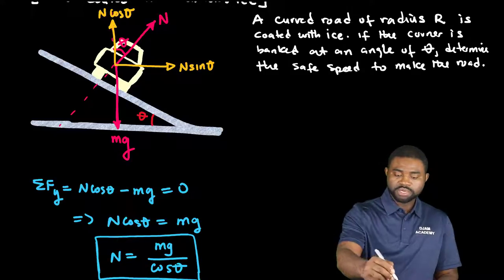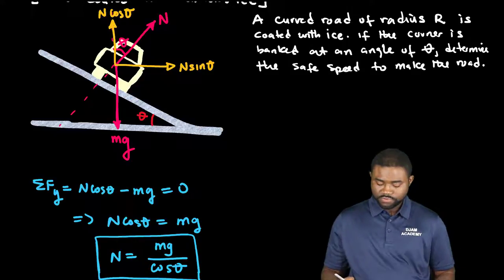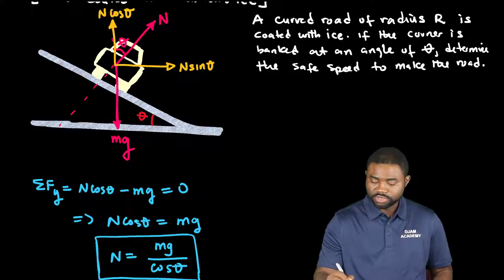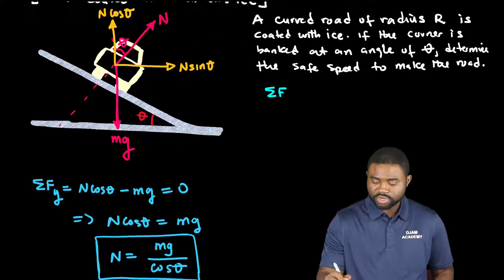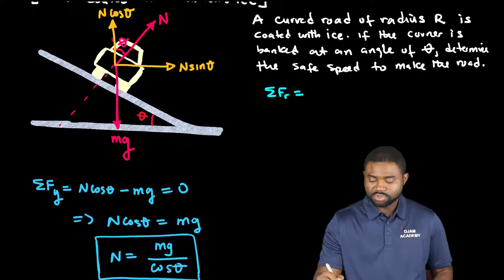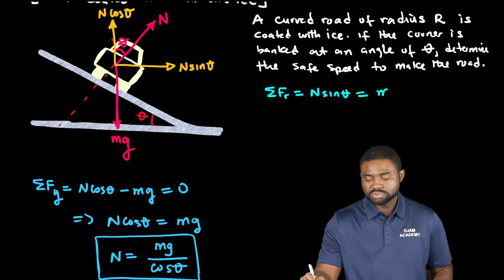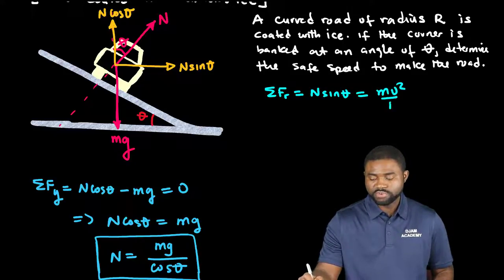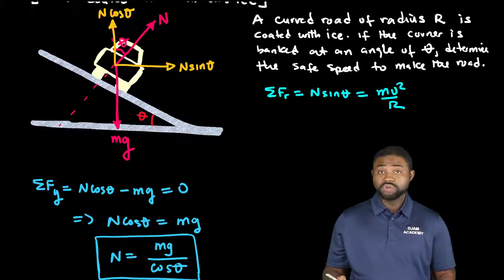Now, let's apply Newton's second law along the radius. The summation of FR is going to be equal to N sine theta. This is equal to mv squared all divided by R, where R represents the radius of the road.